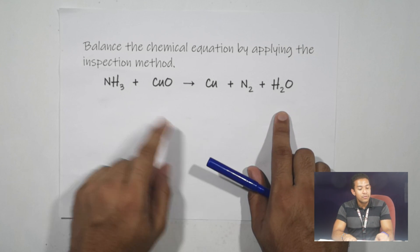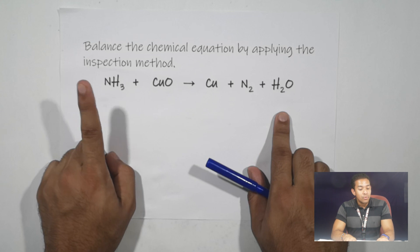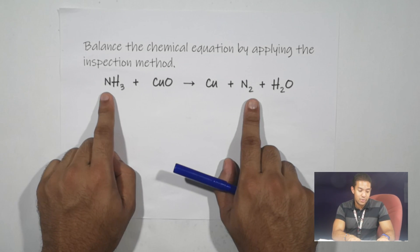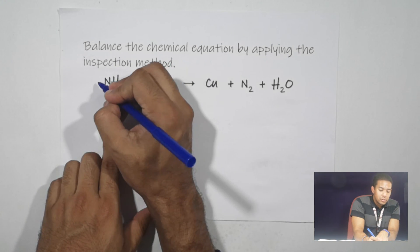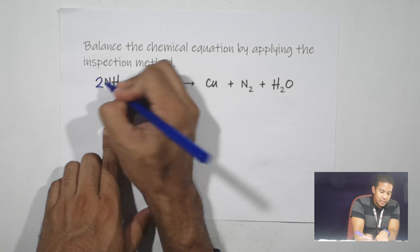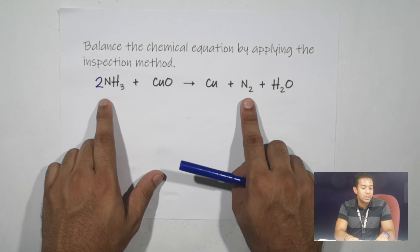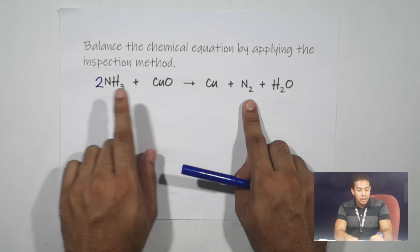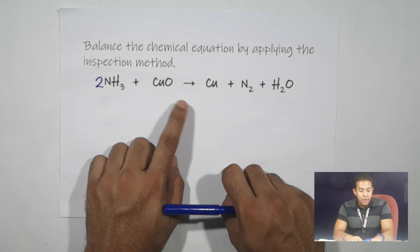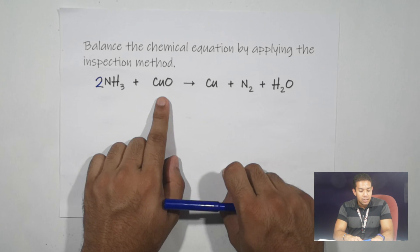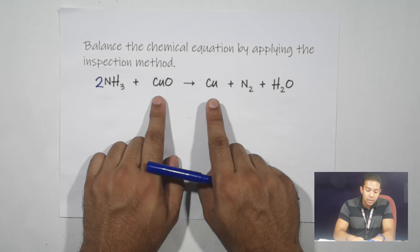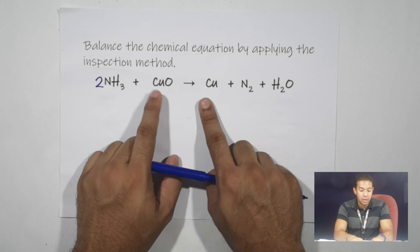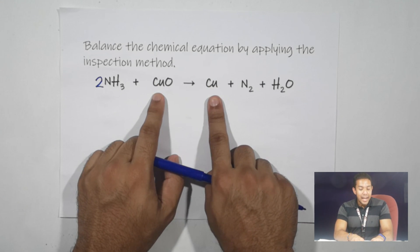From this example, we have two elements to balance first: nitrogen and copper. Looking at nitrogen, we have one on the reactant and two on the product. So we put a coefficient of 2 in front of NH3 on the reactant, so now we have two nitrogen on both the left and right sides. Next, we go to copper. On the reactant, copper has one, and on the product, copper also has one. So copper is already balanced.